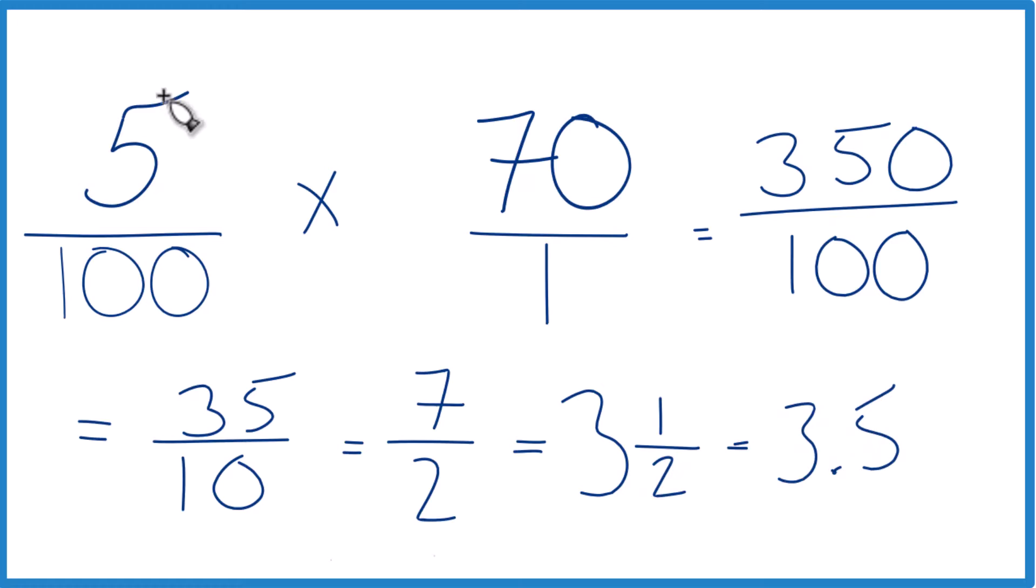So in answer to our question, finding 5% of 70, we get seven halves, or we get three and a half, or you could call the decimal 3.5. That's Dr. B. Thanks for watchin'.